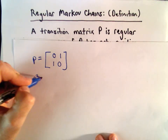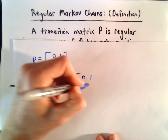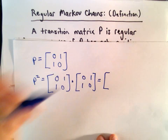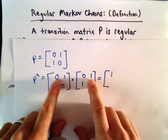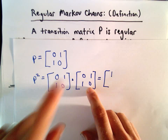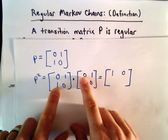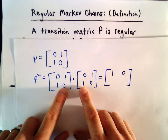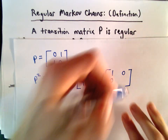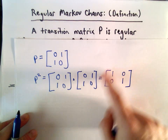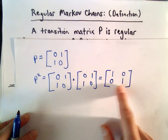Using matrix multiplication on P squared: 0 times 0 plus 1 times 1 gives us 1. Then 0 times 1 plus 1 times 0 gives us 0. The second row, first column: 1 times 0 plus 0 times 1 gives us 0. And the last entry: 1 times 1 plus 0 times 0 gives us 1. So P squared equals the identity matrix [[1,0],[0,1]]. All the entries aren't positive yet, so I can't say it's regular yet.